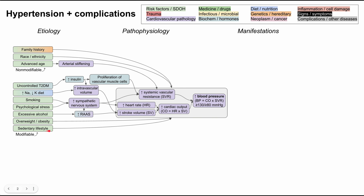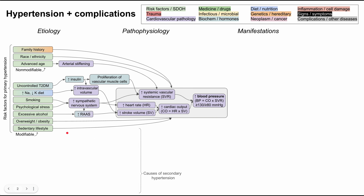Obesity, being overweight, and having a sedentary lifestyle contribute to high blood pressure through multifactorial mechanisms, some known and some not. Everything discussed so far contributes to what we call primary hypertension — hypertension caused by these risk factors rather than another underlying medical illness. Next are causes of secondary hypertension, which is important to differentiate from primary hypertension.